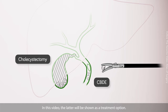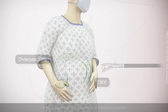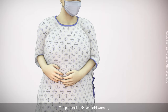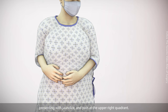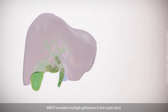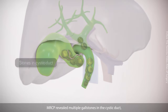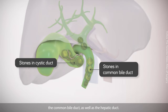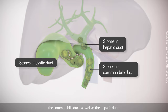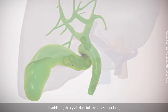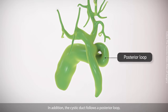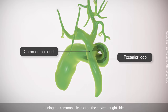In this video, the latter will be shown as a treatment option. The patient is a 54-year-old woman presenting with jaundice and pain at the upper right quadrant. MRCP revealed multiple gallstones in the cystic duct, the common bile duct, as well as the hepatic duct. In addition, the cystic duct follows a posterior loop, joining the common bile duct on the posterior right side.